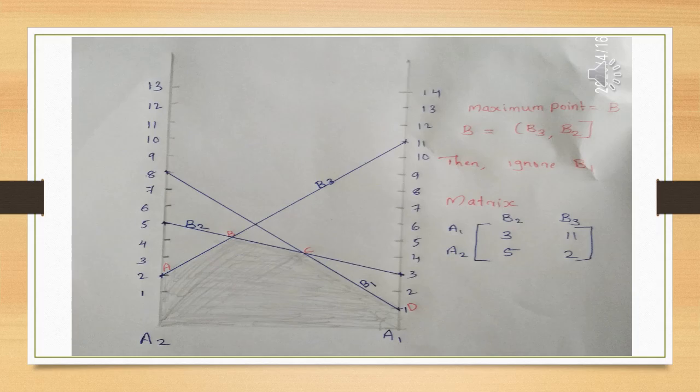A1 and A2 represent the minimizing player. We identify the lower envelope region for the minimizing player and mark that region in red. We have 4 key points on the graph, and the maximum point among the lower envelope is point B. We mark the points as A, B, C, and D.